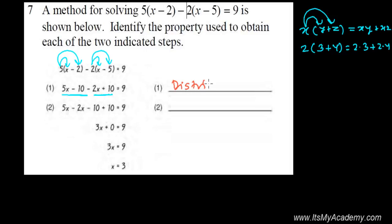This is distributive property. And now here it is 5x minus 10 minus 2x plus 10. So we collected this 5x and 2x together here, and then we collected this minus 10 and 10, same looking things together here.